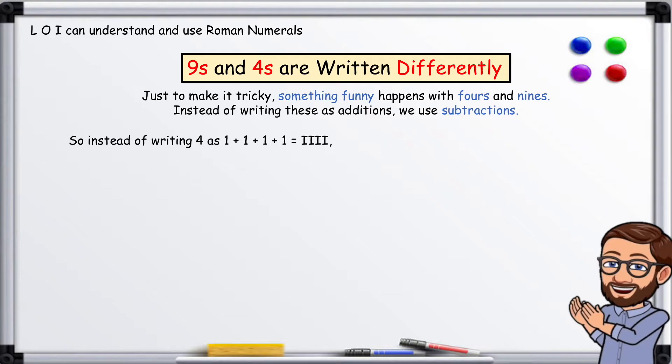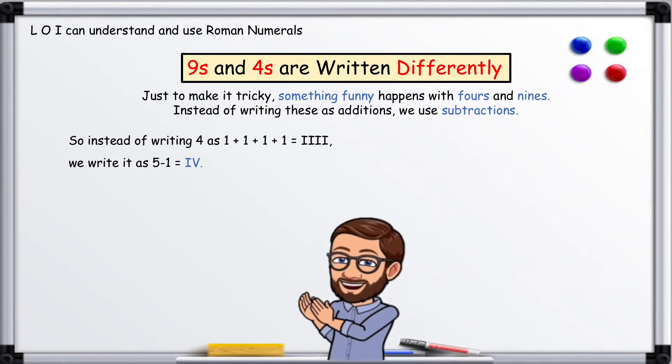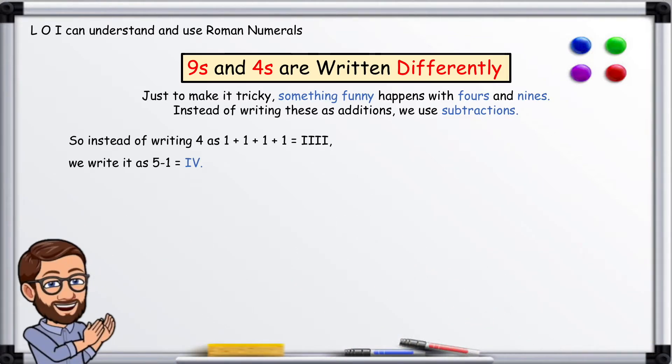So instead of writing 4 as 1 plus 1 plus 1 plus 1 equals IIII, we write it as 5 minus 1, so IV. The number you take away goes on the left of the number you take it away from.